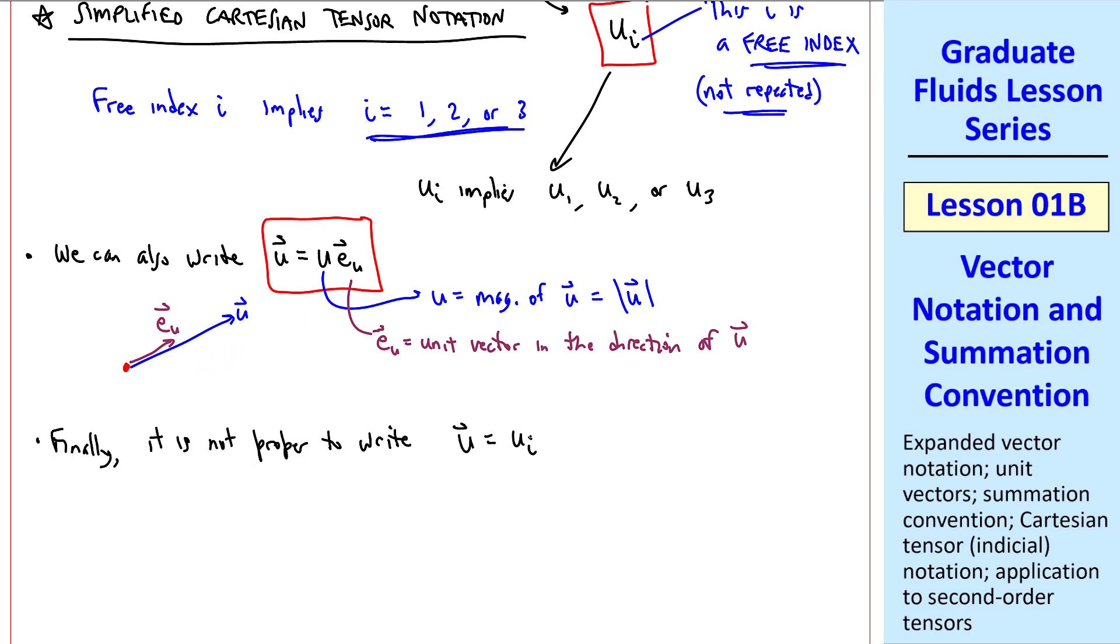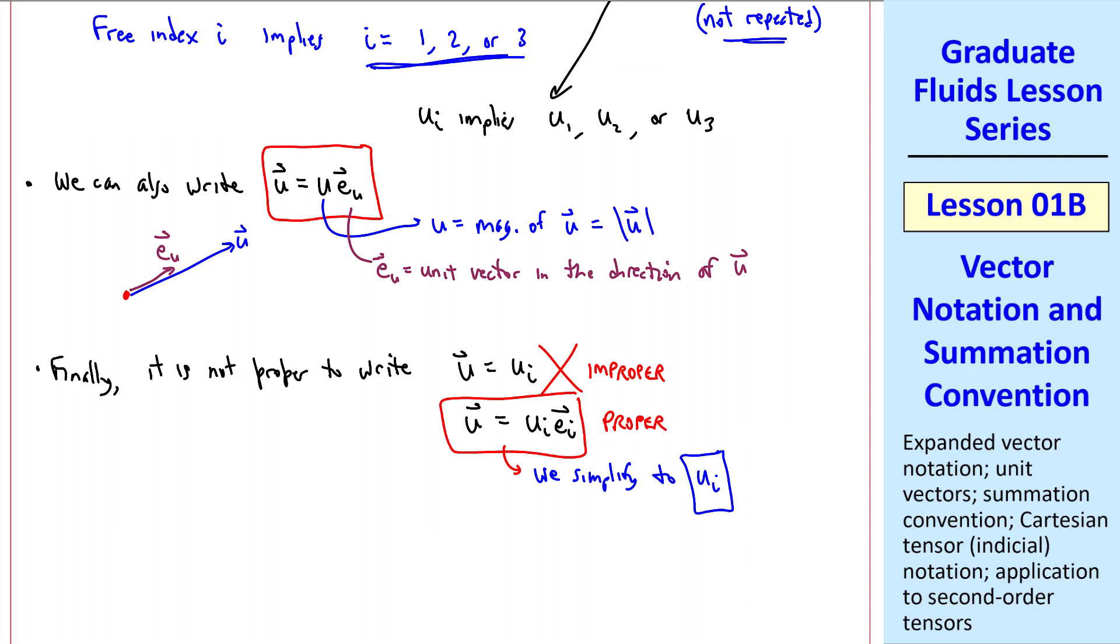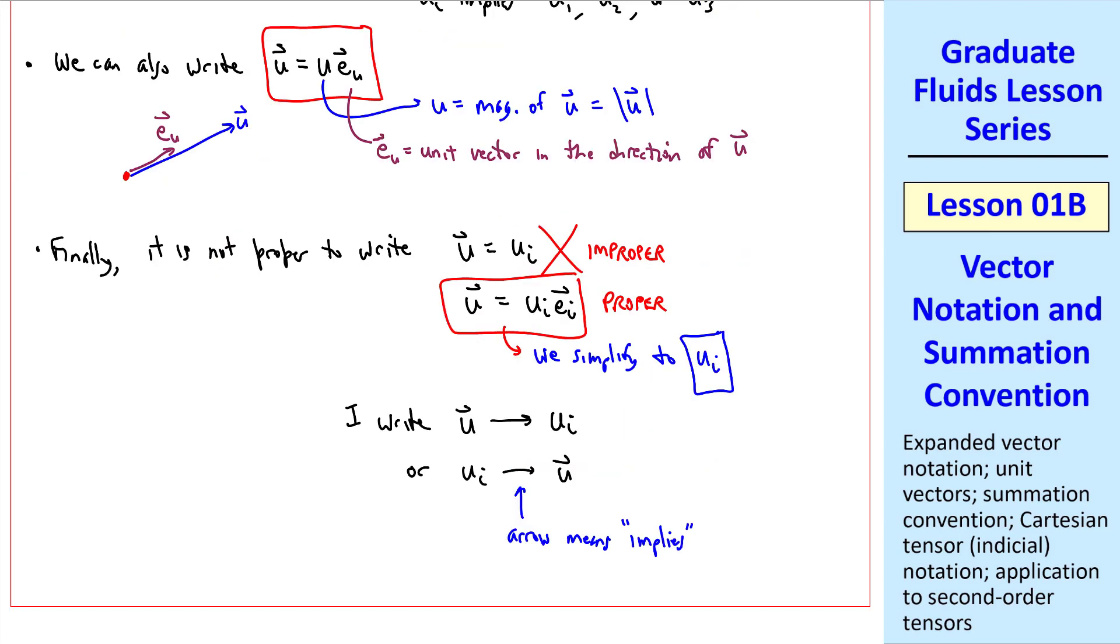Finally, it is not proper to write u vector equal ui, where we're mixing up vector and tensor notation. It is proper to write u vector equal ui ei vector, which we like to simplify to just ui, and avoid having to write the ei unit vectors all the time. The way I will handle it when I want to go from vector to tensor notation is to write u vector implies ui, or vice versa, where the arrow means implies. That way we're not writing something mathematically improper. The bottom line is that when you see a ui, you think of it automatically in your mind as the three components of this vector u.